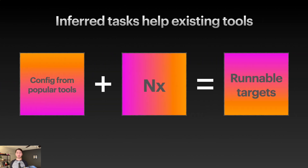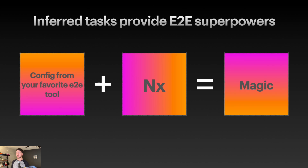We heard earlier about inferred tasks, which arrived in NX 18. This feature allows NX to dynamically create targets based on the different configuration files that already exist in your projects. These targets get all the same features we just talked about: use of affected, proper caching, and integration to NX Cloud with no extra config involved. Use Vite? Cool. More of a webpack person? That works as well. But what about for E2E testing tools — are they supported? Well, we have config from your favorite E2E tool plus NX equals magic.